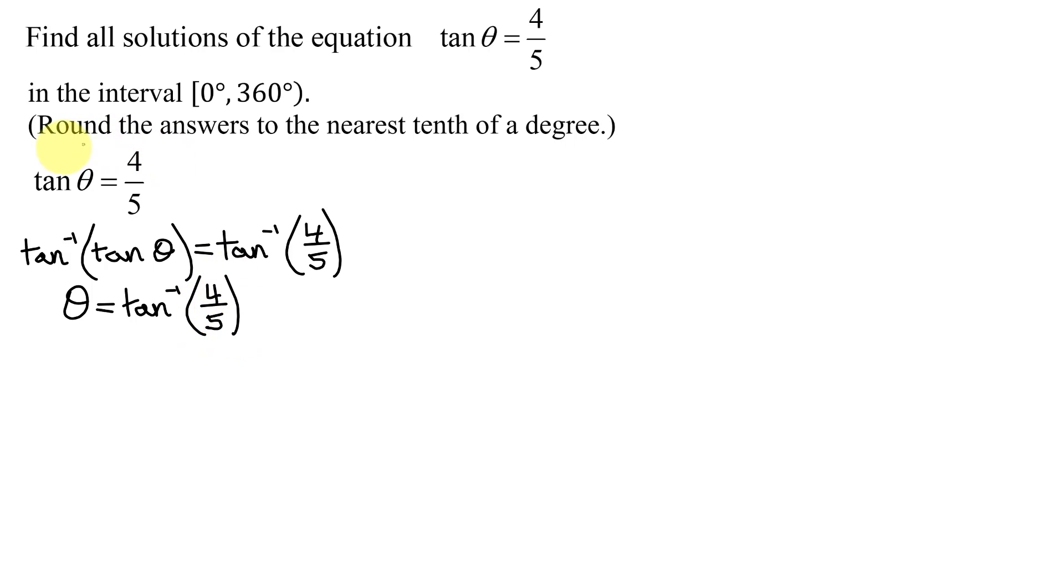Now remember, the tangent of theta equals four-fifths is an equation with an infinite number of solutions. I only need those between 0 and 360 degrees. But this equation, theta equals the inverse tangent of four-fifths, by definition, only has one solution. And that solution has to be in the interval between negative 90 degrees and positive 90 degrees. So I need to be somewhere either in quadrant one or quadrant four.